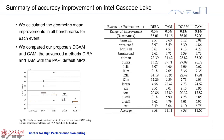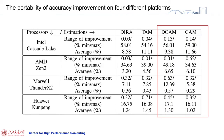Our new method gained accuracy improvements across all four processors. The average improvement was about 10% and 6% on Intel and AMD processors respectively. For ARM processors, although the average improvements were not as significant, the maximum accuracy improvement on the Huawei Kunpeng processor also achieved up to 16%.